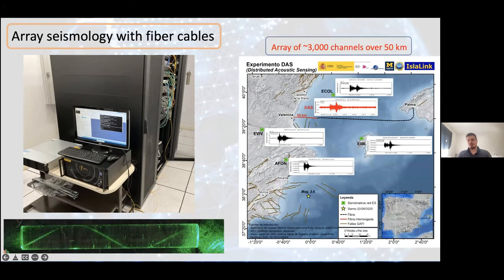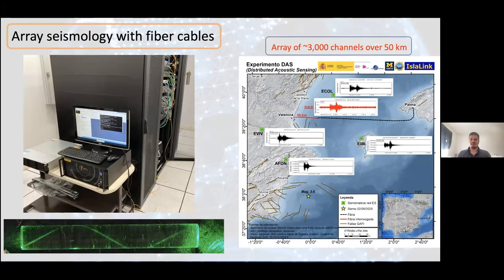The great part of this technology is that we can turn fiber optic cables into thousands of sensors. For example, here we are in Spain with a cable between Valencia and Palma. During our two-week experiment, a magnitude 3.6 earthquake happened. The seismic network in that region is pretty sparse — only four stations — but with DAS we turned those 50 kilometers into 3,000 channels, nearly a factor of 1,000 compared to the current seismic array in the region.